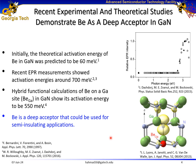Initially, the theoretical activation energy of beryllium in gallium nitride was thought to be 60 meV. However, later experimental studies showed its activation energy in the range of 500 to 700 meV. So beryllium is actually a deep acceptor in gallium nitride that could be used for semi-insulating applications.